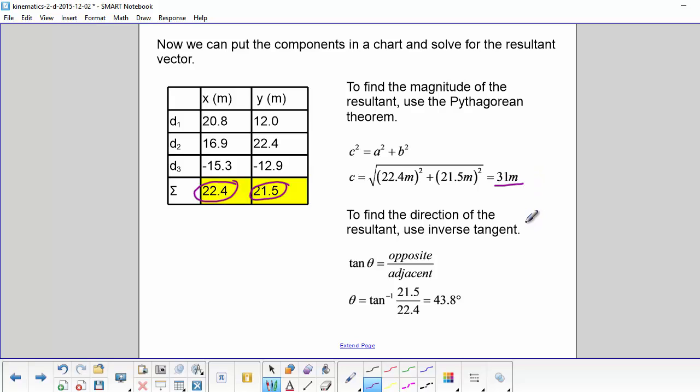To find the direction of the resultant, we use inverse tangent. So tangent equals opposite over adjacent, and theta would be equal to inverse tangent of 21.5 divided by 22.4. So that is our Y direction over our X direction. That's because our resultant would look like this. So here is our Y, and here is our X. And this is the angle that we are solving for. So our final angle is 43.8 degrees.